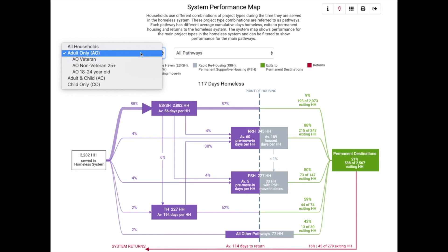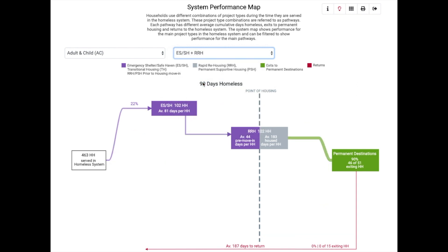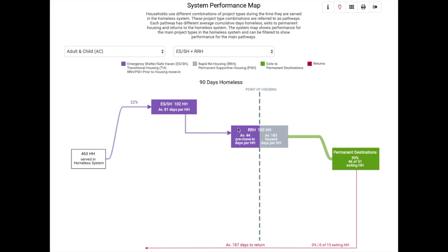The system map also has the capability of allowing you to narrow even further by looking at how different populations move through various service pathways simultaneously. You can select one household type and one service pathway. For example, if you're interested in how families move through emergency shelter safe havens to rapid rehousing, first select the adult and child household type, then select the ESSH plus RRH option from the pathway drop-down. Now you only see data related to how that population moved through the system: 22% of families entered this service pathway, spending an average of 81 days in emergency shelter or safe havens, with an average pre-move-in wait of 44 days and an average of 183 days in rapid rehousing. 90% of these families exited to permanent housing, with 0% returning to homelessness.